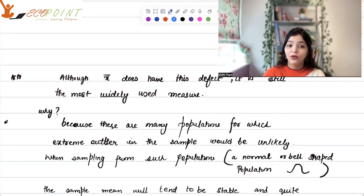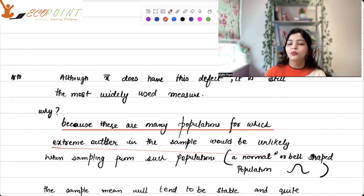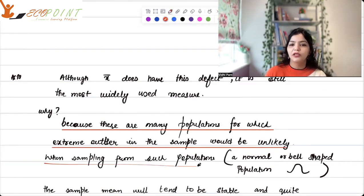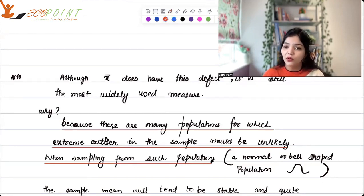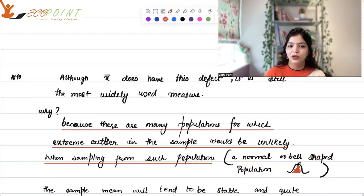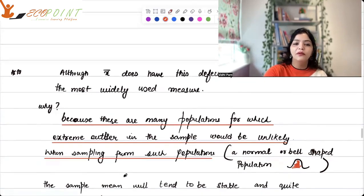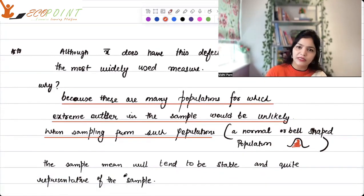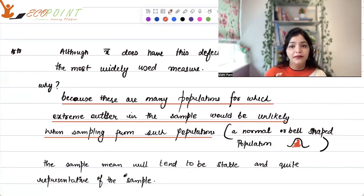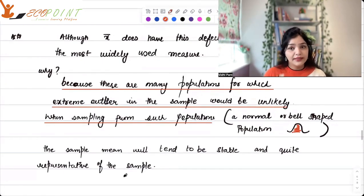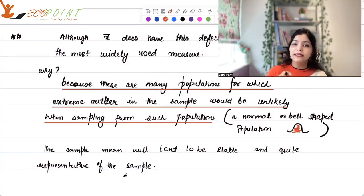So, please write down, although x bar does have this potential defect, it is still the most widely used measure for location. Why? The reason behind it is, because there are many populations for which extreme outliers in the sample would be unlikely. And when you are sampling from such populations, which populations will these be, those in which you have normal distribution, which is a bell-shaped population, because in bell-shape if you see the concentration is more like this. On extremes it is less. The percentage of values on the extremes is much lower. So, that is why. So, the sample mean will tend to be stable and quite representative of the sample. This is why mean is widely used.